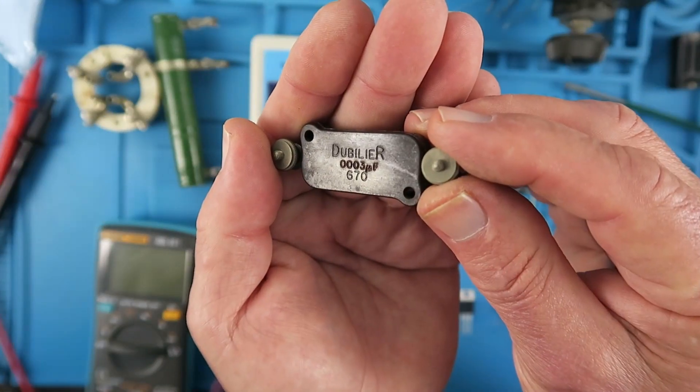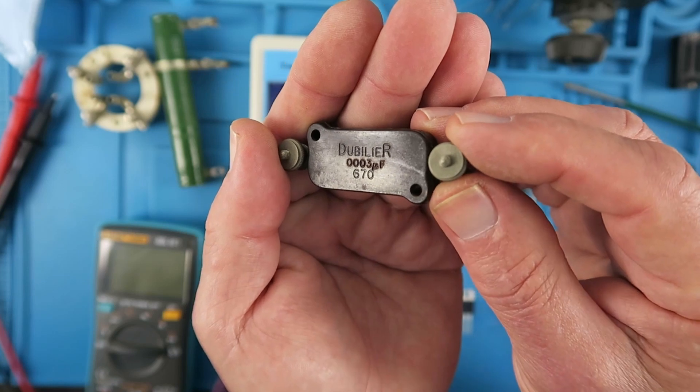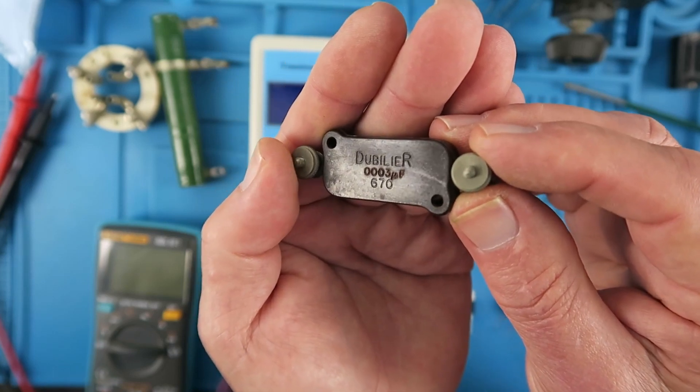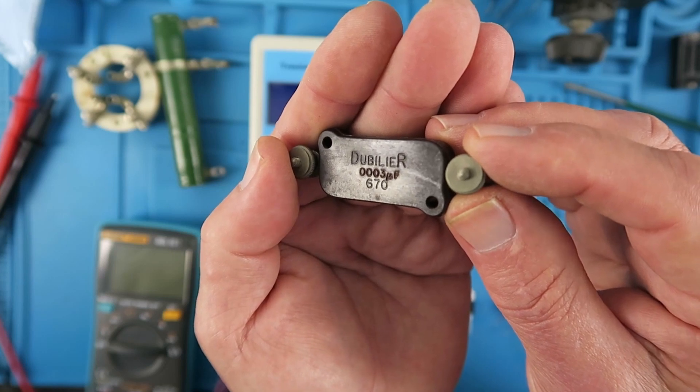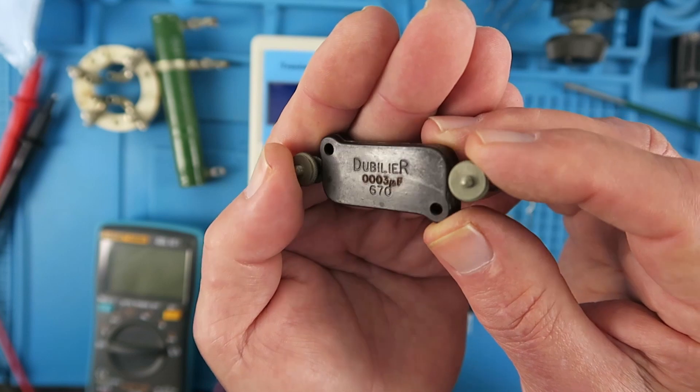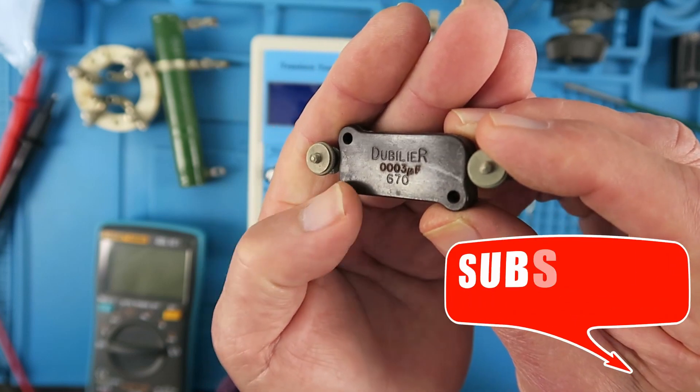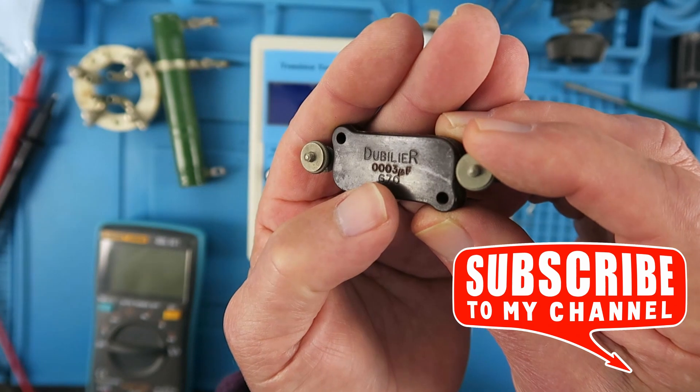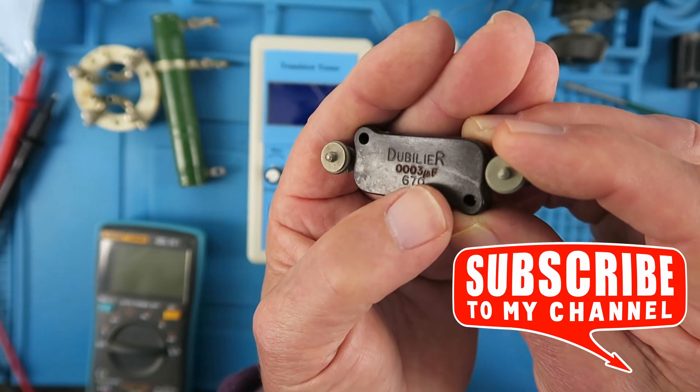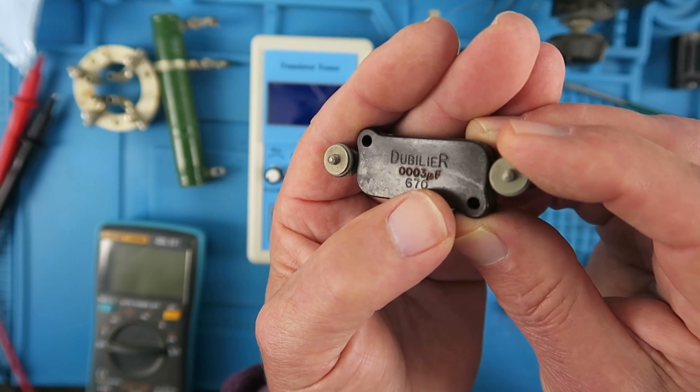This is one of the oldest capacitors I could find. I think this dates from the 1930s, and it's by the Dubilier company, still going today, founded by William Dubilier, famous radio engineer. And it's marked as 0.0003 microfarads, or we would probably say today, 300 picofarads. So I wonder what it measures now.